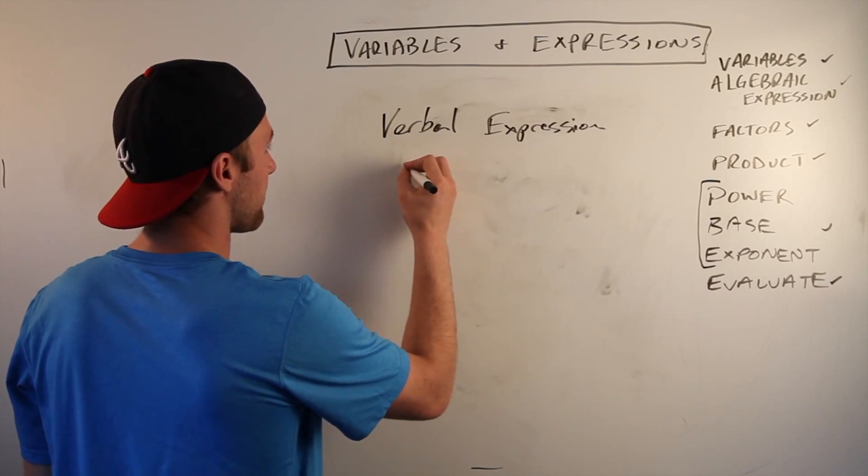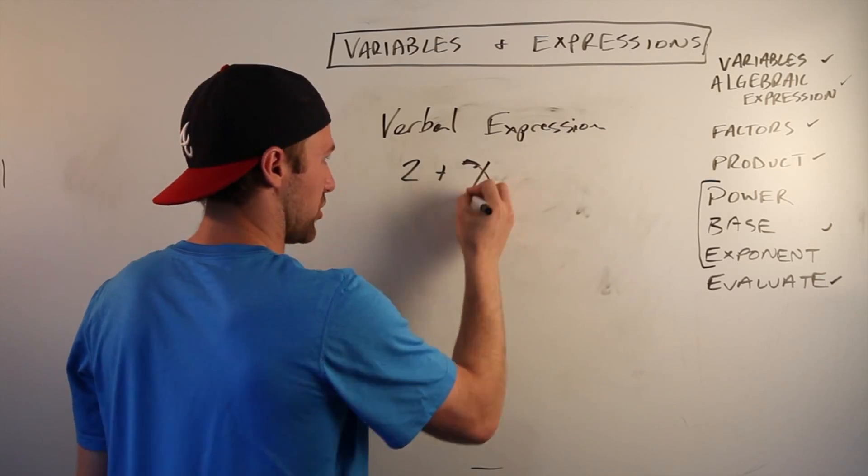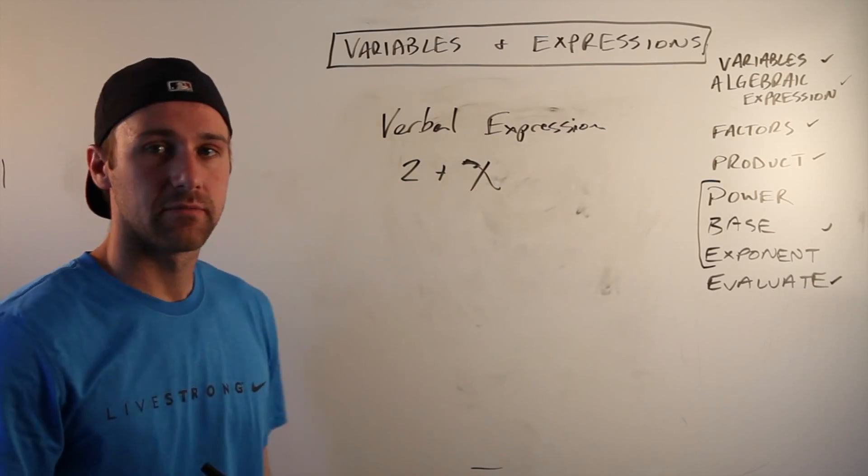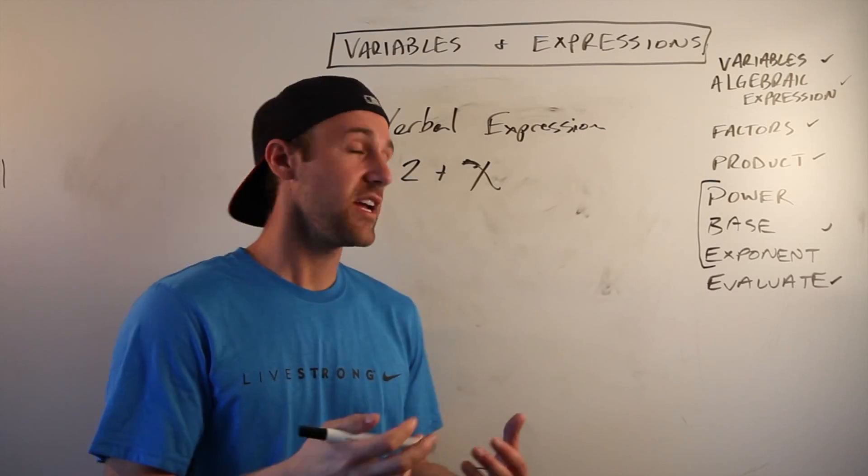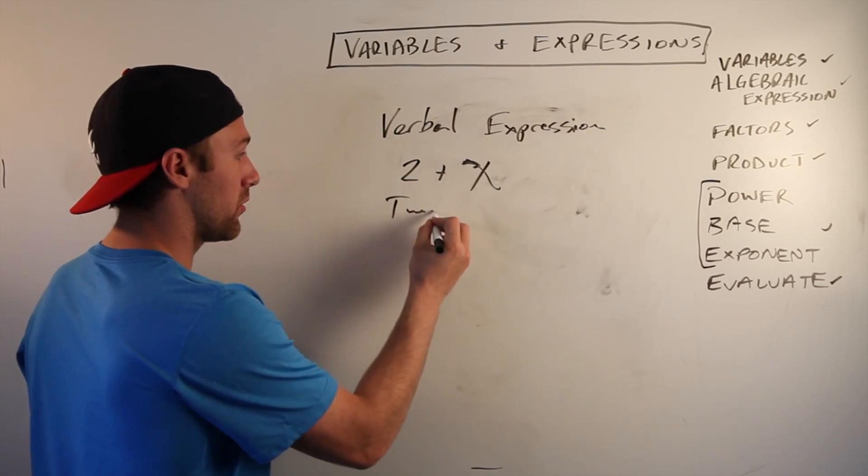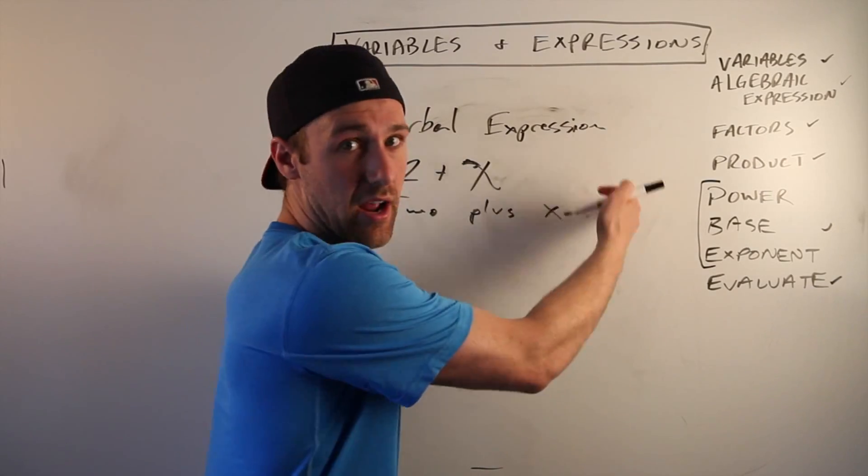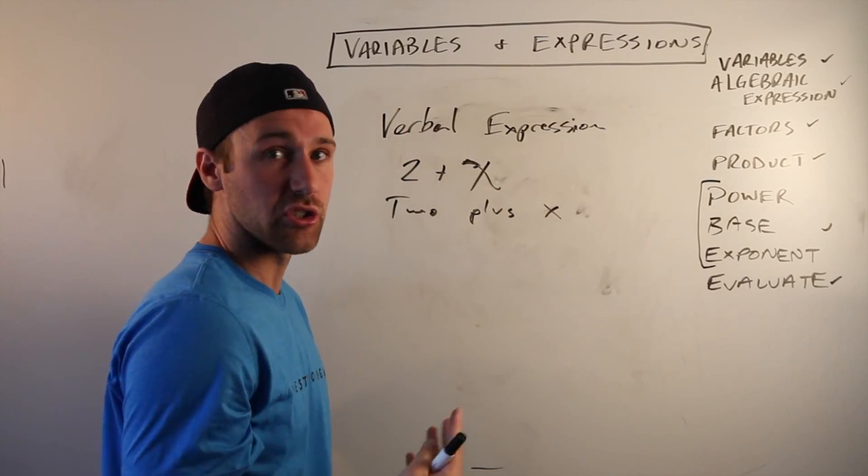So let's say two plus x. You could say two plus x or you could say two plus a number x because we don't know what x is. We could just assume it's a number.